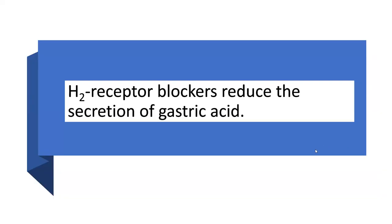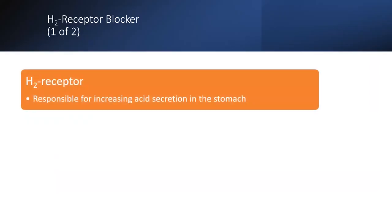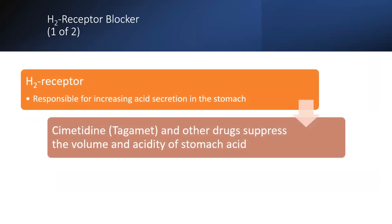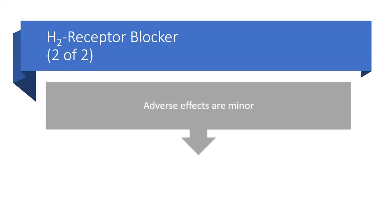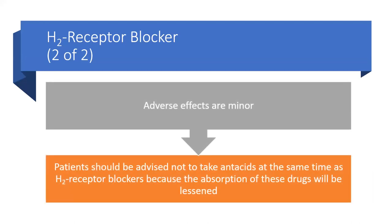H2 receptor blockers reduce the secretion of gastric acid by blocking gastric acid secretion. Cimetidine (Tagamet) and other drugs suppress the volume and acidity of stomach acid and are used to treat GERD symptoms. Adverse effects are very minor. Patients should be advised not to take antacids at the same time as H2 receptor blockers because the absorption of these drugs will be lessened.